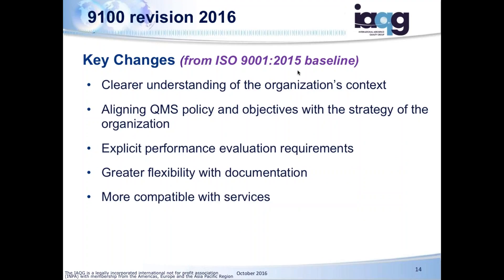More key changes from ISO: a clear understanding of the organization's context right up front in Section 4 — internal and external issues, aligning policy and objectives with the strategy of the organization. The new standard is more performance-based. The 9100 was already headed that way with key performance indicators for the results of key processes as required in 9101. Greater flexibility with documentation — there's no set requirement for a quality manual or six documented procedures, but please do not have a bonfire saying you no longer need these.